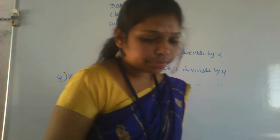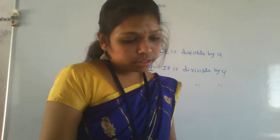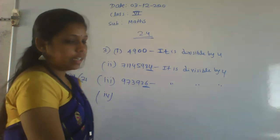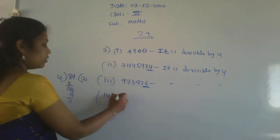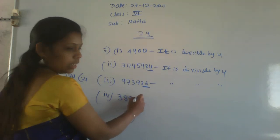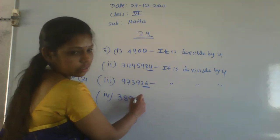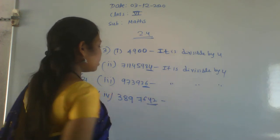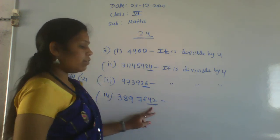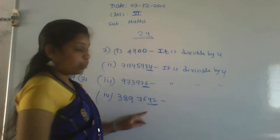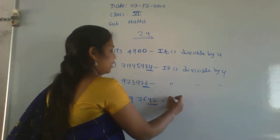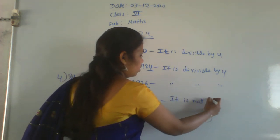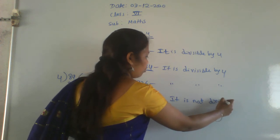Fourth number: 389764. The last 2 digits are 64. Is 64 divisible by 4? No — wait, checking: there is a remainder. So it is not divisible by 4.